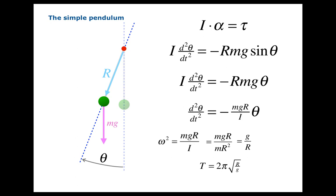The amplitude does not affect the period either, though it does affect the motion a little. Remember, showing that the physical pendulum undergoes simple harmonic motion relied on the approximation that sine theta is approximately equal to theta. So what we've shown is that for small oscillations, the motion of both the simple pendulum and the physical pendulum is simple harmonic motion. If you pull the pendulum way back to a very large angle, the approximation will not work as well, and it will not truly be simple harmonic motion.